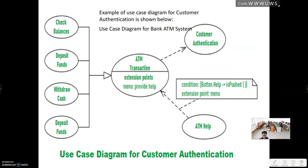ATM use case diagrams — the customer. You can access the ATM to check balance or deposit funds, withdraw cash, or deposit funds. The ATM processes the transaction at the point, and the menu provides the customer application. The user enters their password and the customer application shows the condition buttons, helping the menu procedure list so you can select it.